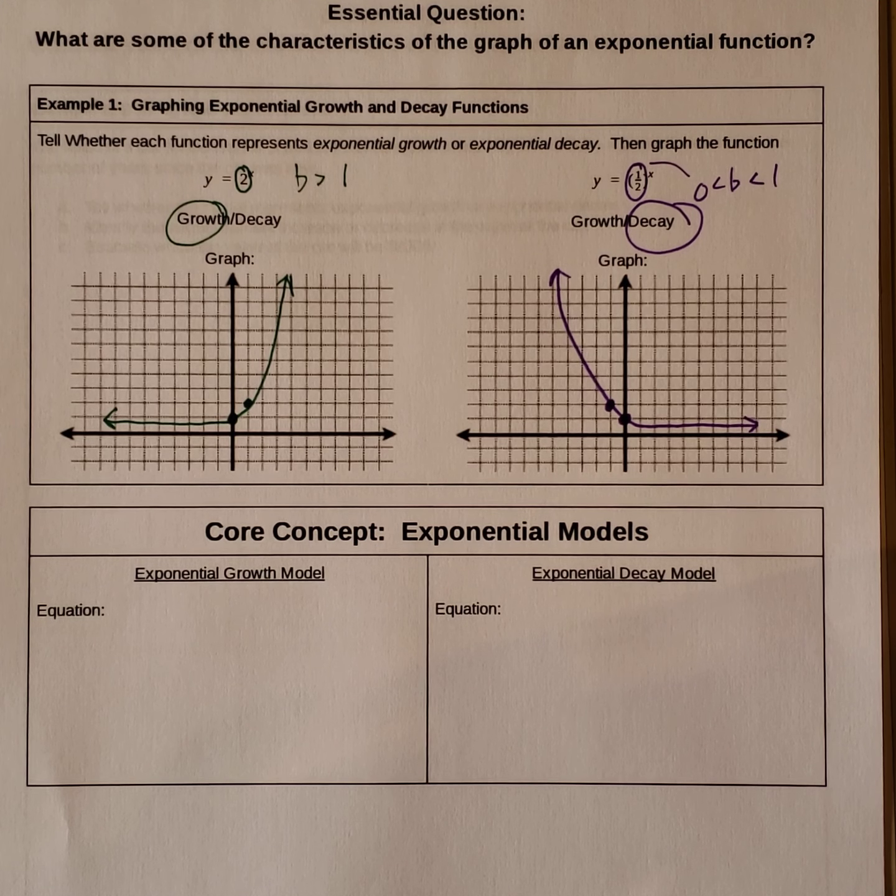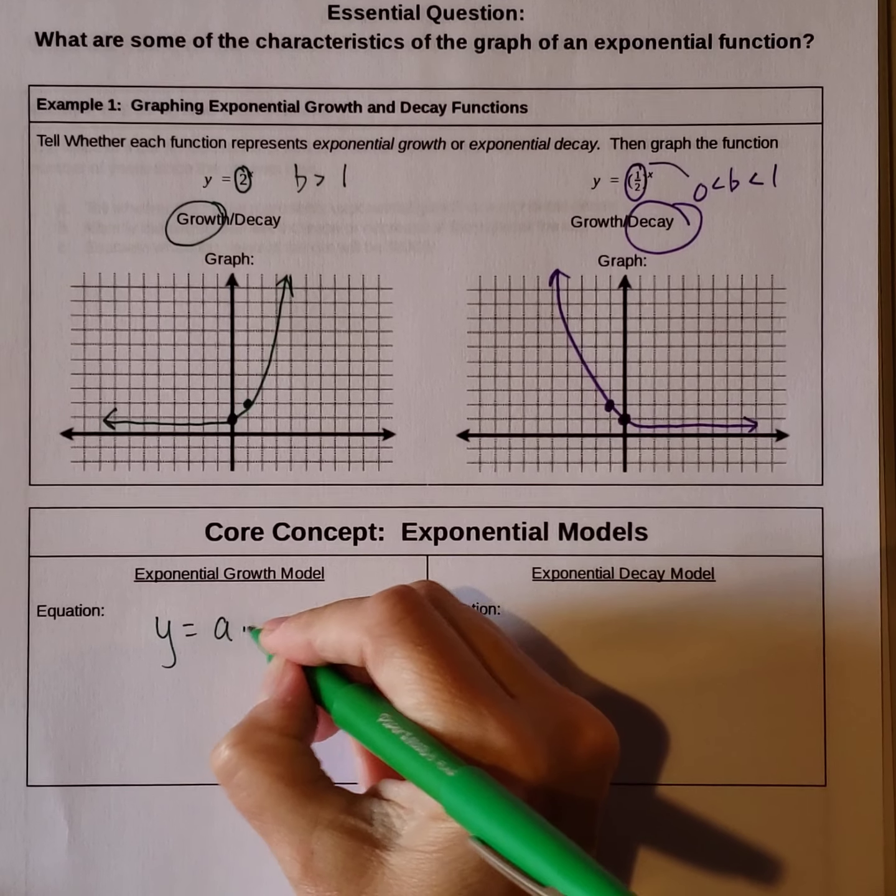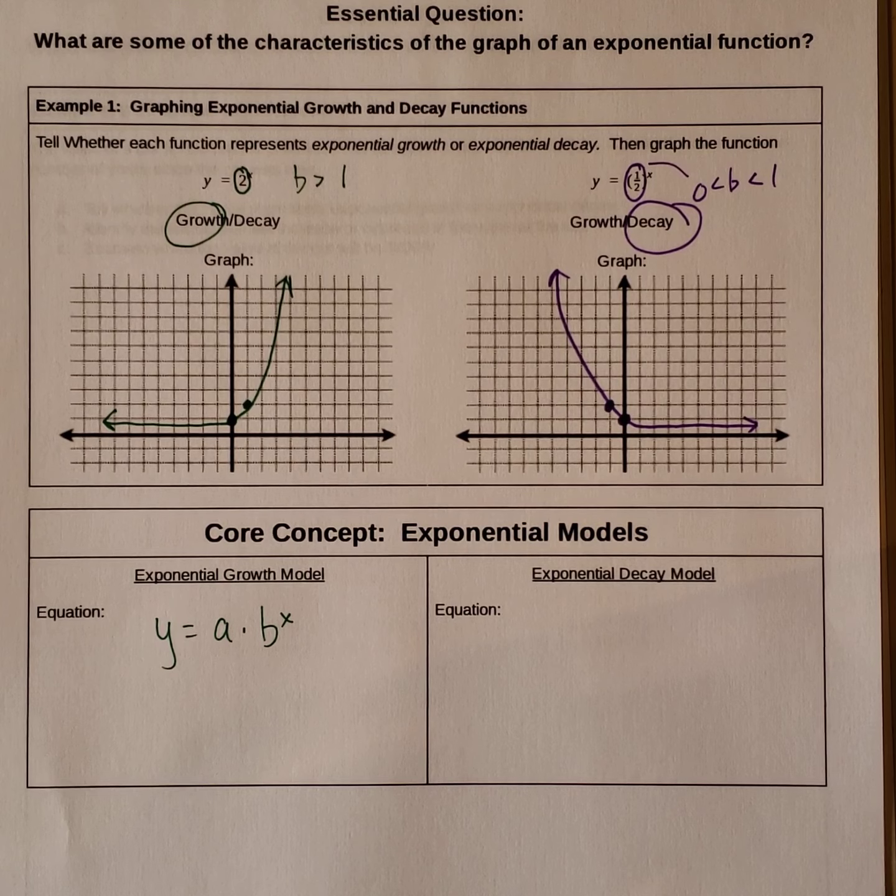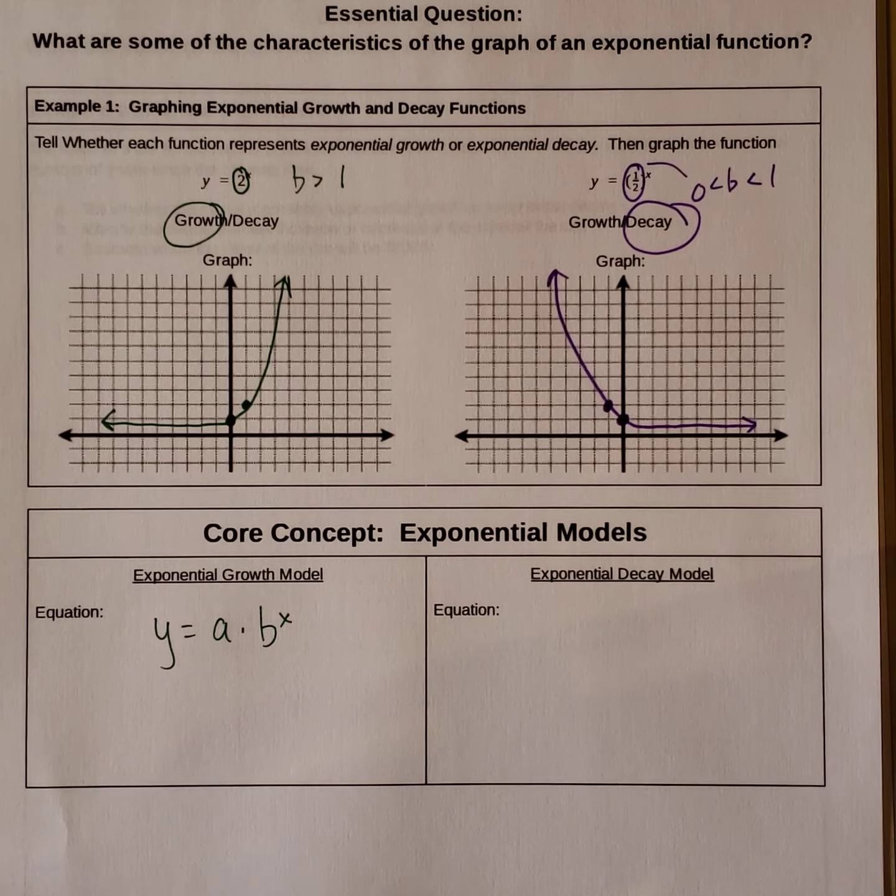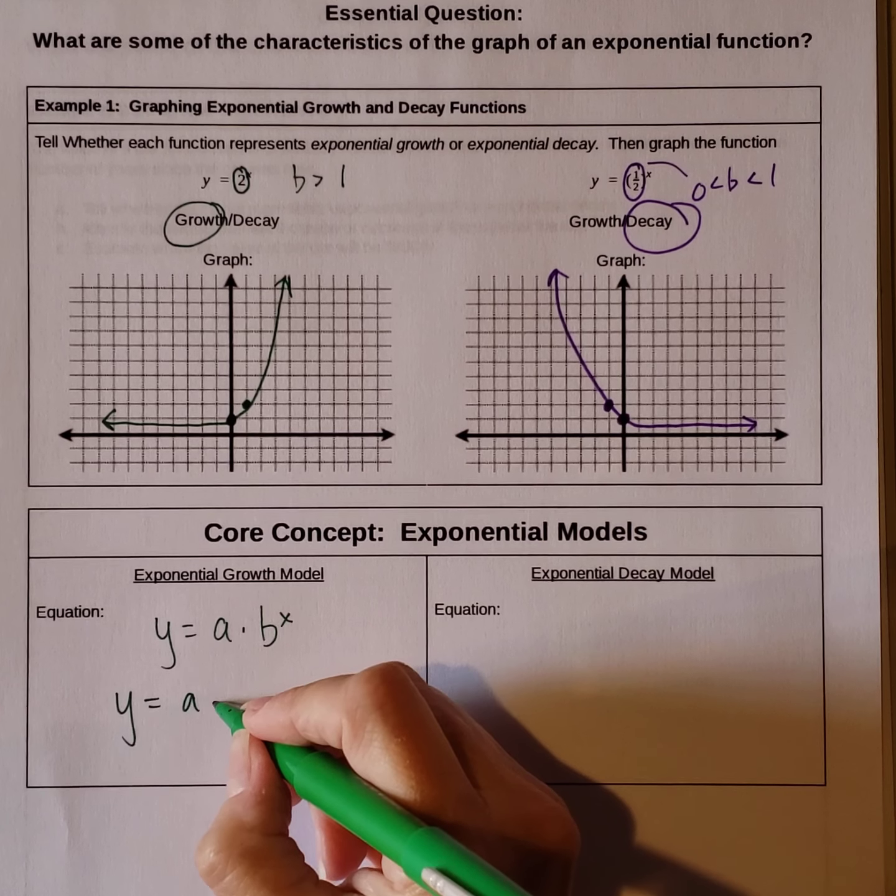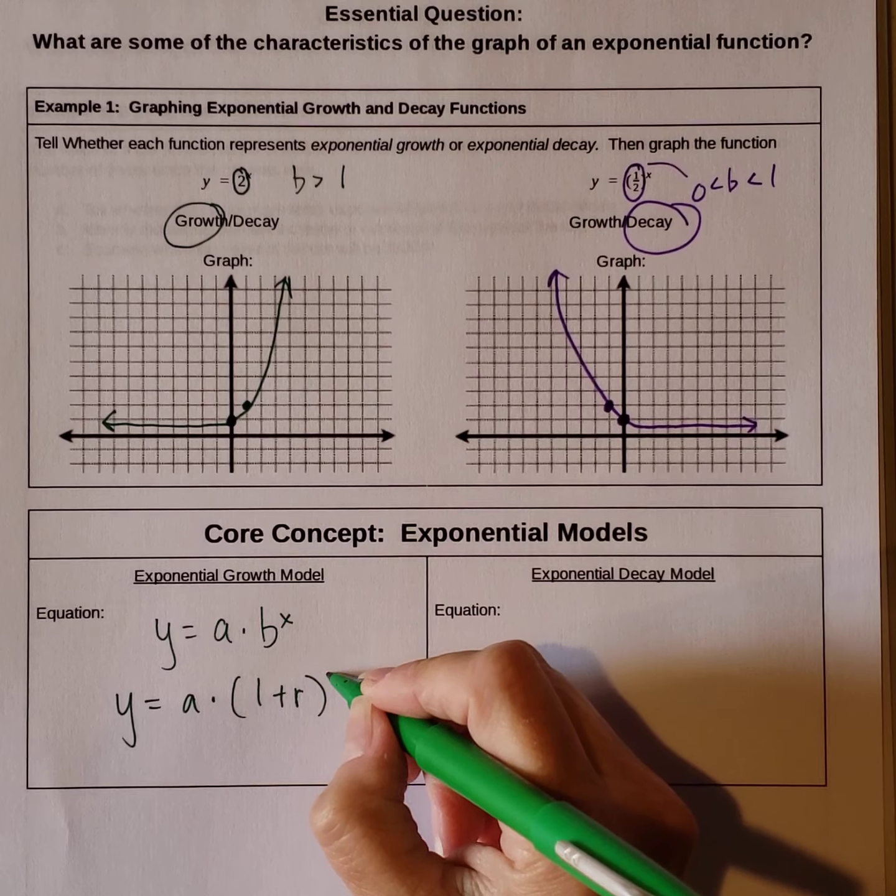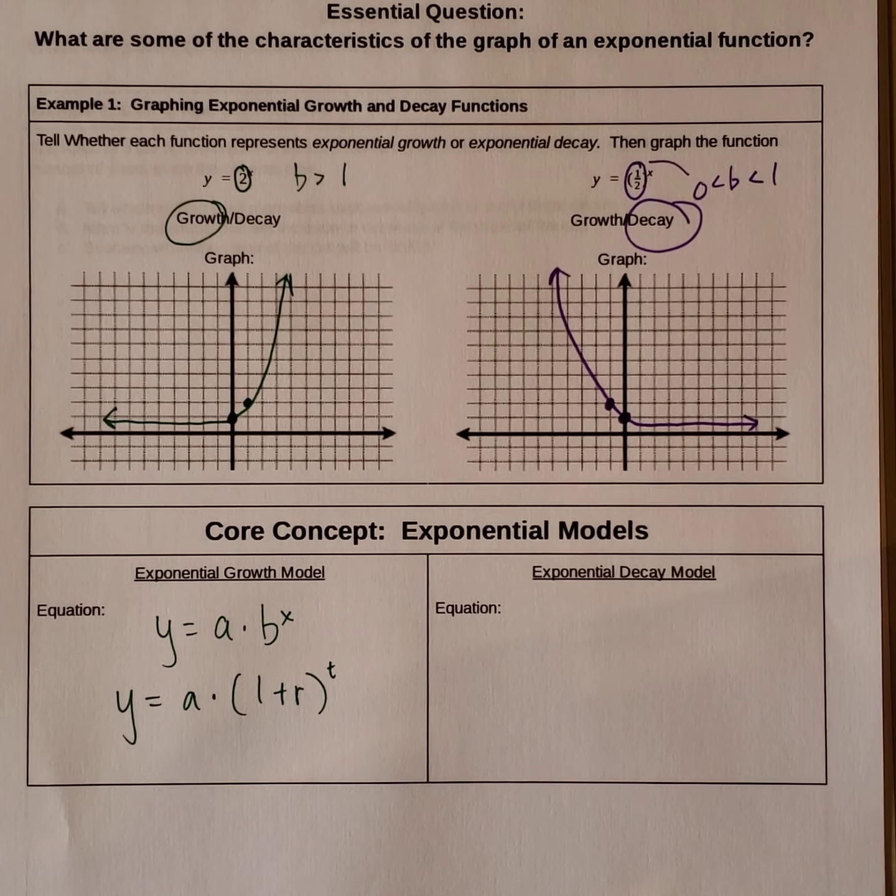Exponential growth model. Our equation is y equals a times b to the x. That's what we were looking at in the previous example. When it's growth though, this b value is greater than 1. And we can break it down a little bit further. So y equals a times 1 plus r raised to the t. So this is another way to write the growth model. This 1 plus r is taking the place of the b.